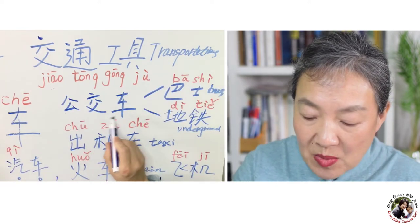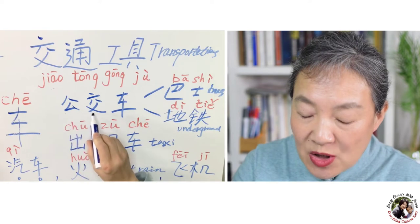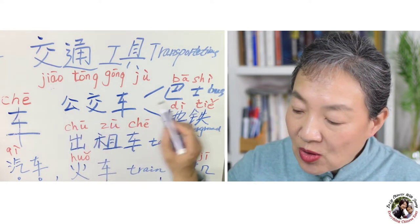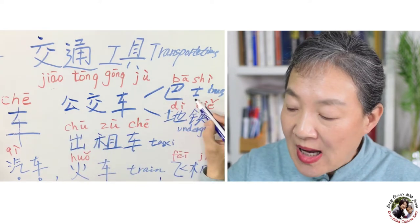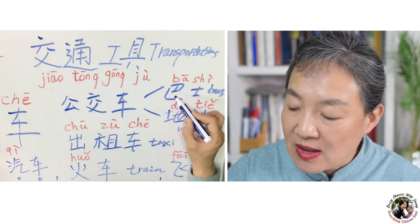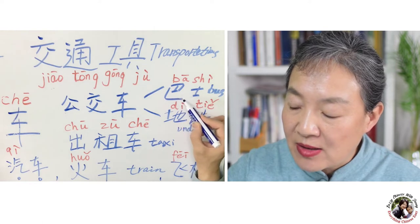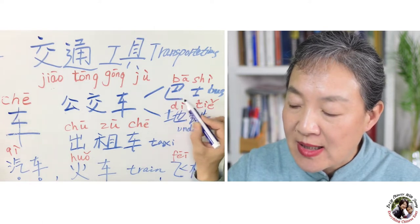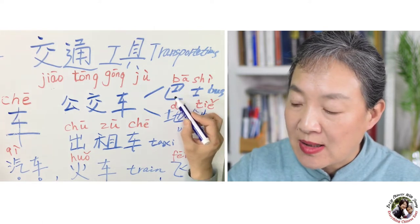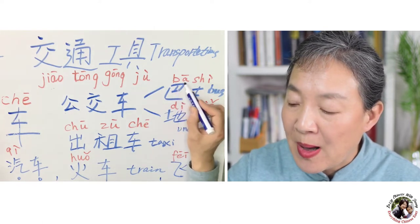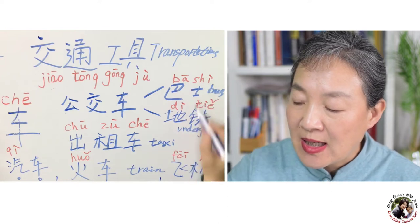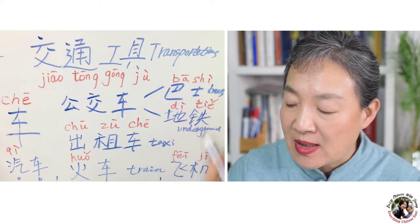公交车 means public transportation, including 巴士. 巴士 is the direct transliteration from 'bus' — in Chinese, 巴士 means bus.